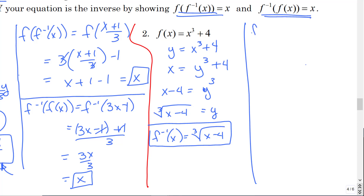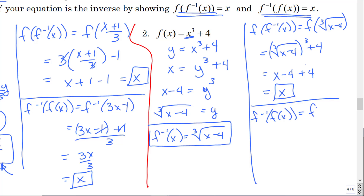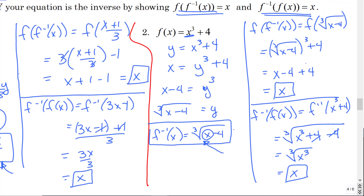Now I need to verify. So f of f-inverse of x equals f of the cube root of (x minus 4). I go to my f function and replace x with the cube root of (x minus 4). That expression is all cubed plus four. With a cube and a cube root, they undo one another, just like an inverse function should, and I get x. Then f-inverse of f of x, which is x cubed plus four — I go to my f-inverse function and replace x with x cubed plus four. That's the cube root of x cubed, which again is x. So I have found my inverse and verified that they are indeed inverses of one another.